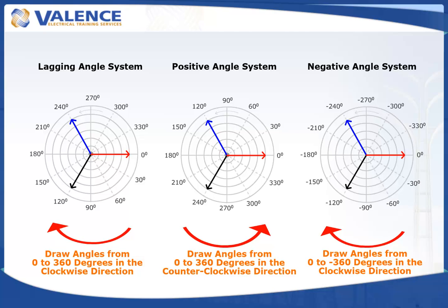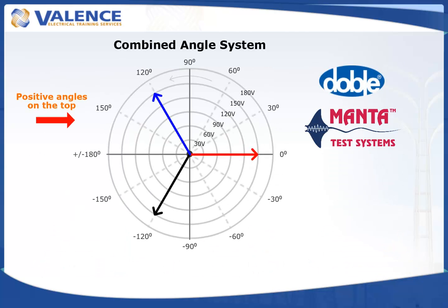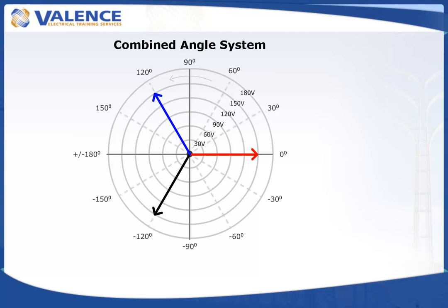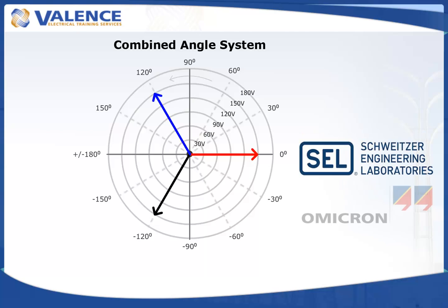There is a fourth angle system that combines the positive system from DOBLE and MANTA test sets from 0 to 180 degrees on the top half of the phasor diagram and the negative system from GE UR relays on the bottom half. This combined angle system is probably the most popular system in the world because it simplifies any math equation that uses angles. It is possible, or even likely, to get results greater than 360 degrees when using the other angle systems, which means you always have to be watching for it and modify your answers accordingly. This rarely happens with a combined angle system, which is used in SEL relays and Omicron test sets.